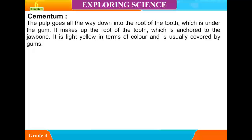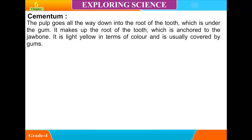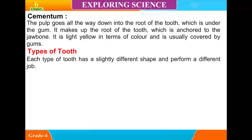Cementum. The pulp goes all the way down into the root of the tooth, which is under the gum. Cementum makes the root of the tooth anchored to the jaw bone. It is light yellow in color and is usually covered by gums.